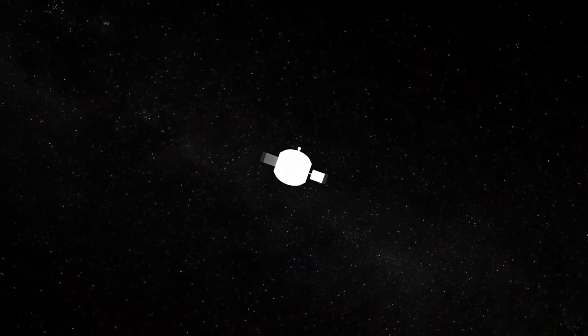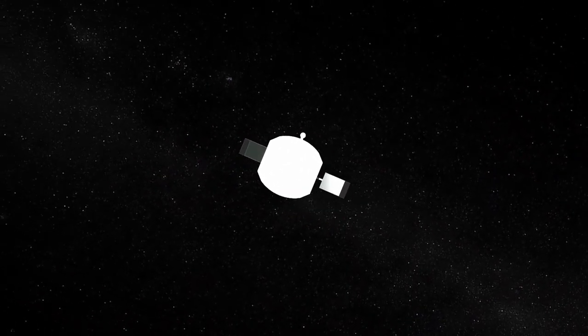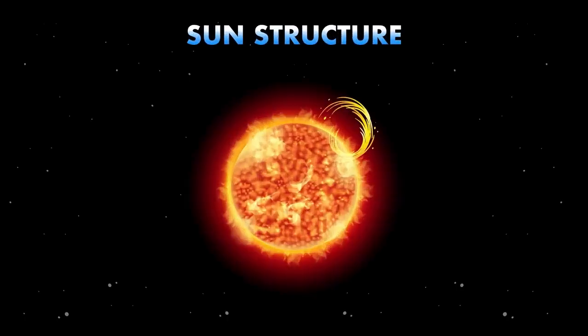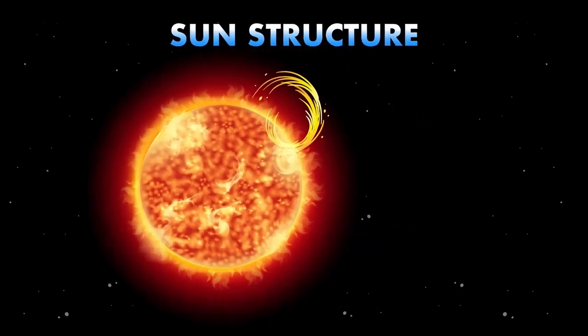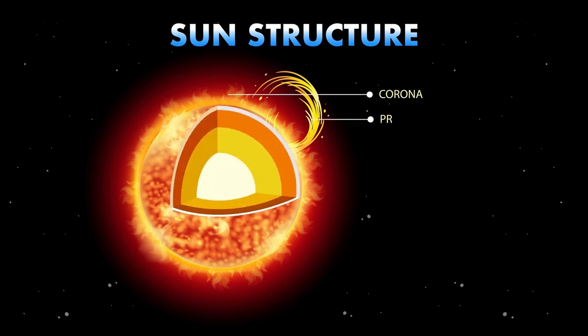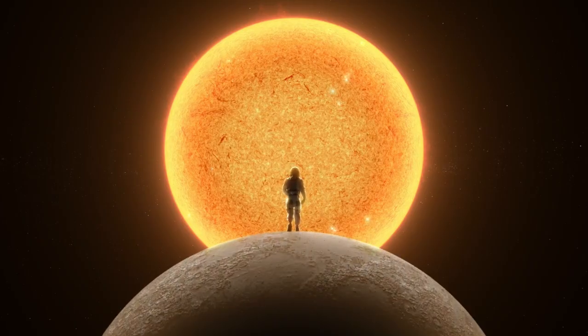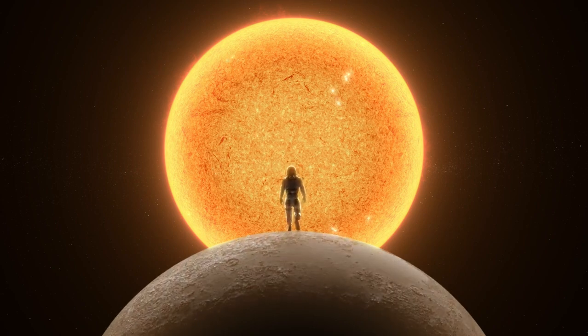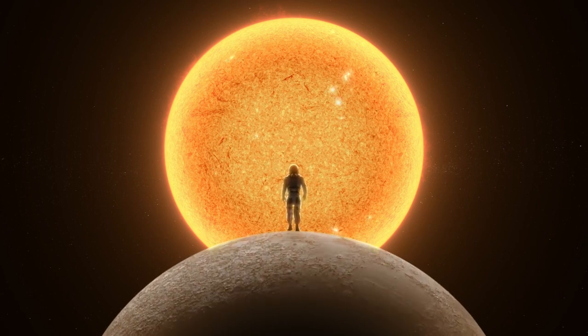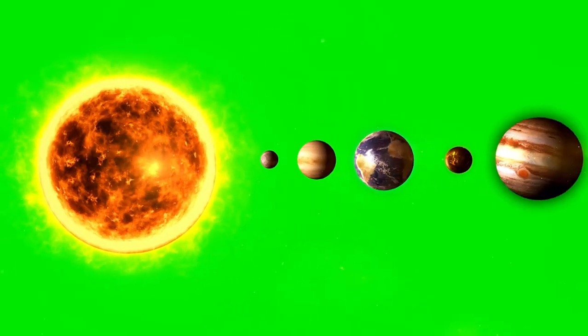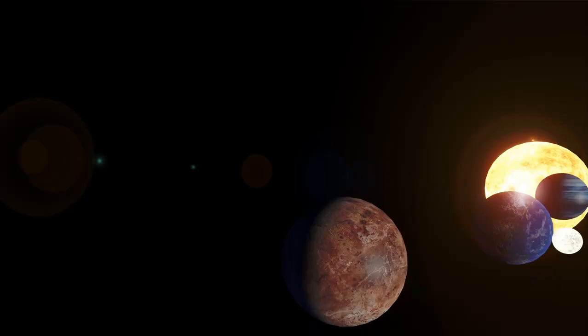Exoplanets are most commonly discovered through the changes they cause in their host stars. The gravitational influence of an exoplanet can cause its host star to wobble, and this radial velocity can be detected by astronomers. The Kepler Space Telescope used the transit method, which measures the dimming of a star's light when an exoplanet passes in front of it. This method has provided invaluable information about exoplanets, including their size, distance, and temperature.